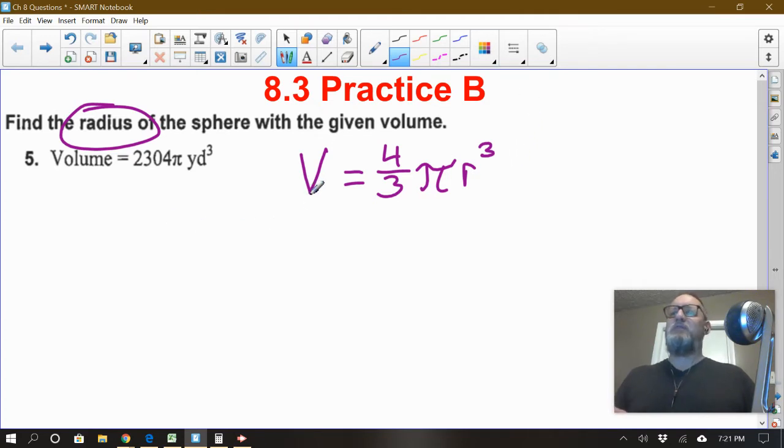Now they don't ask us to find the volume. They're actually giving us the volume and we have to find the radius. So let's just plug this number in where it belongs. I'm going to put that number right here, 2,304π. And just bring this stuff down. Four thirds π r cubed.